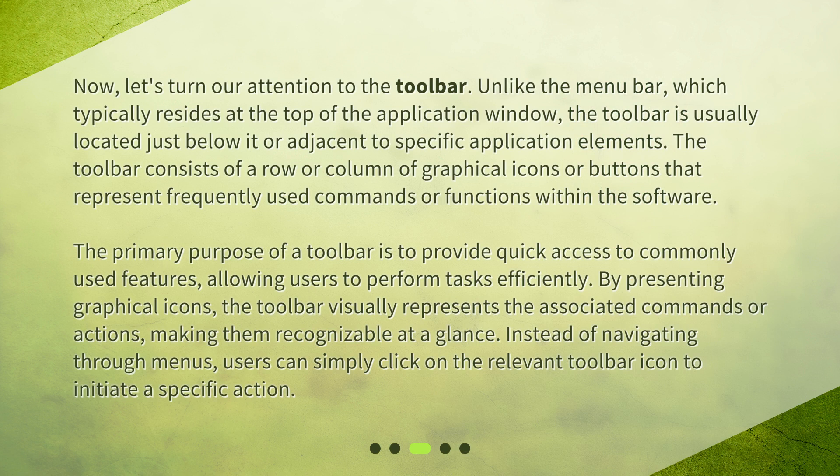Now let's turn our attention to the toolbar. Unlike the menu bar, which typically resides at the top of the application window, the toolbar is usually located just below it or adjacent to specific application elements. The toolbar consists of a row or column of graphical icons or buttons that represent frequently used commands or functions within the software.